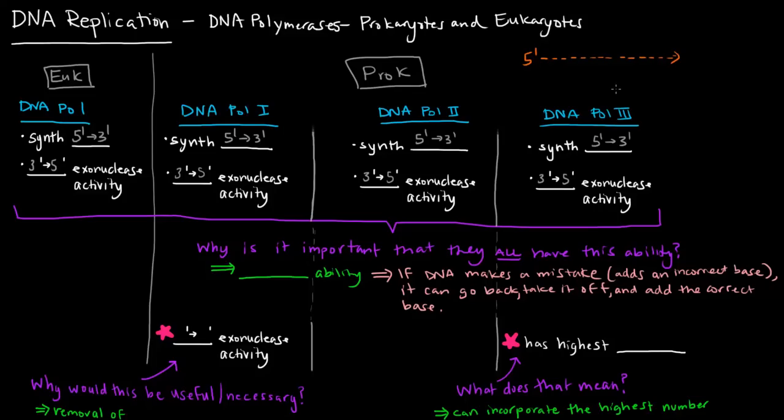So 3' to 5' exonuclease activity is the idea that they can go backwards. They can go from the 3' end towards the 5' end, and then get rid of their incorrect DNTP that they attached, and then add the correct one.